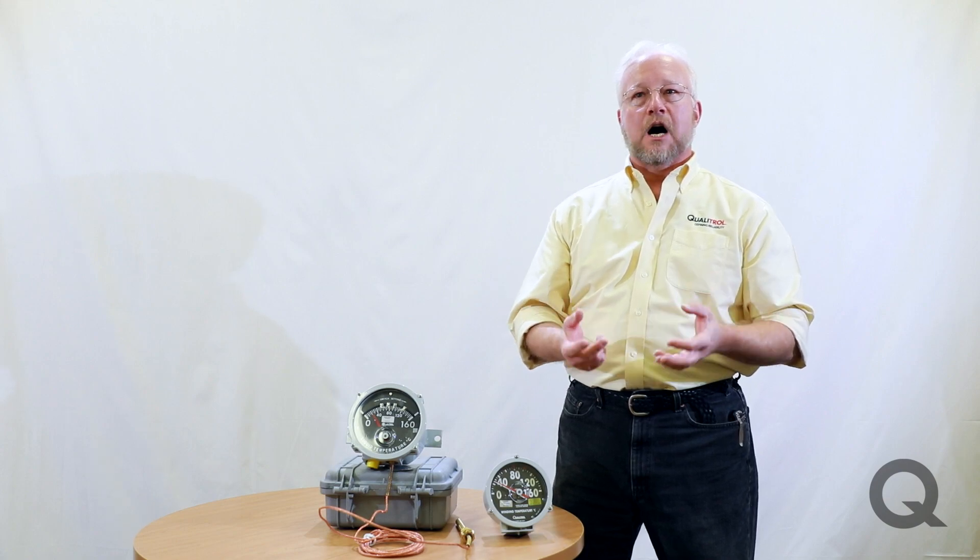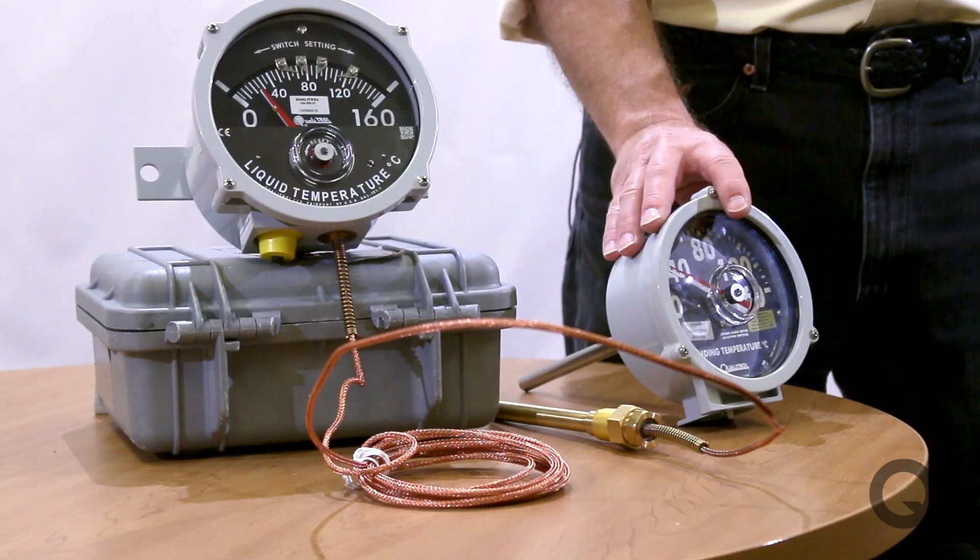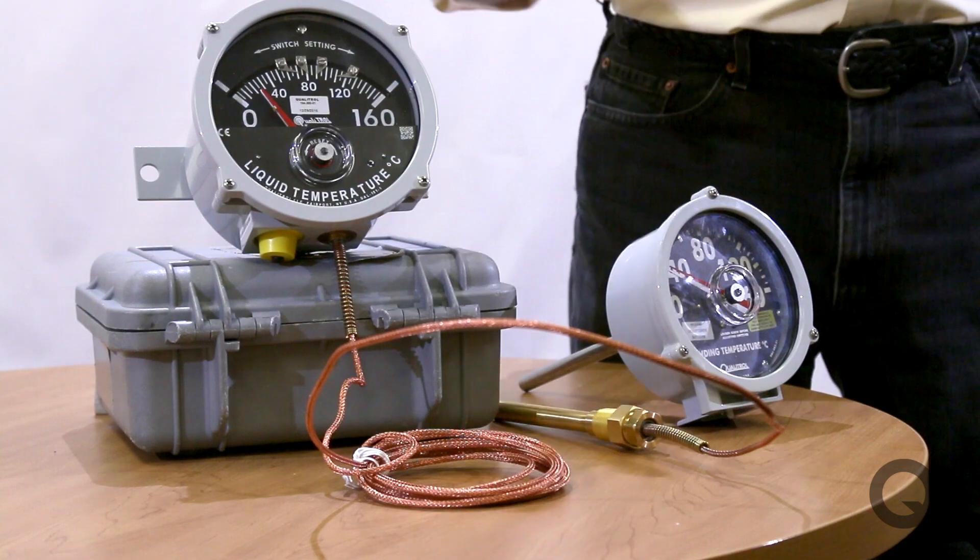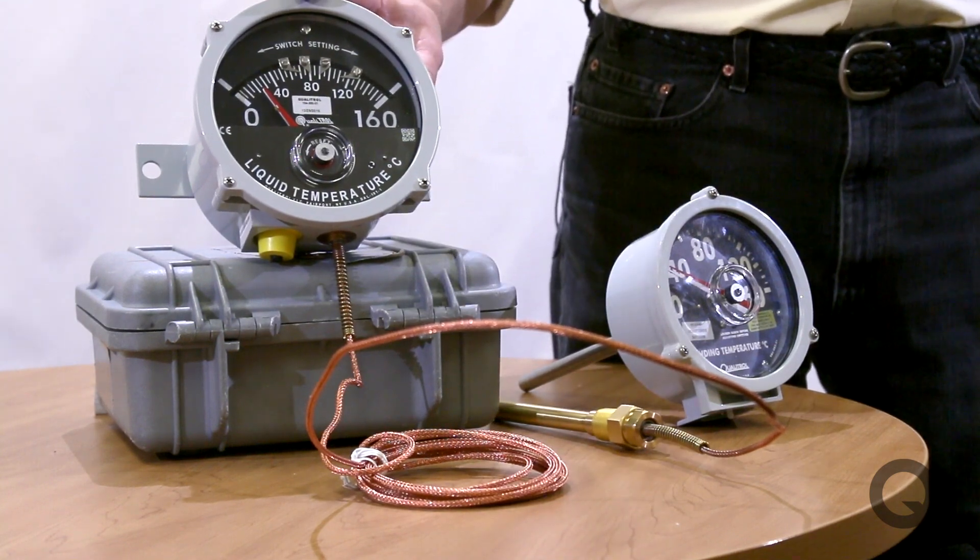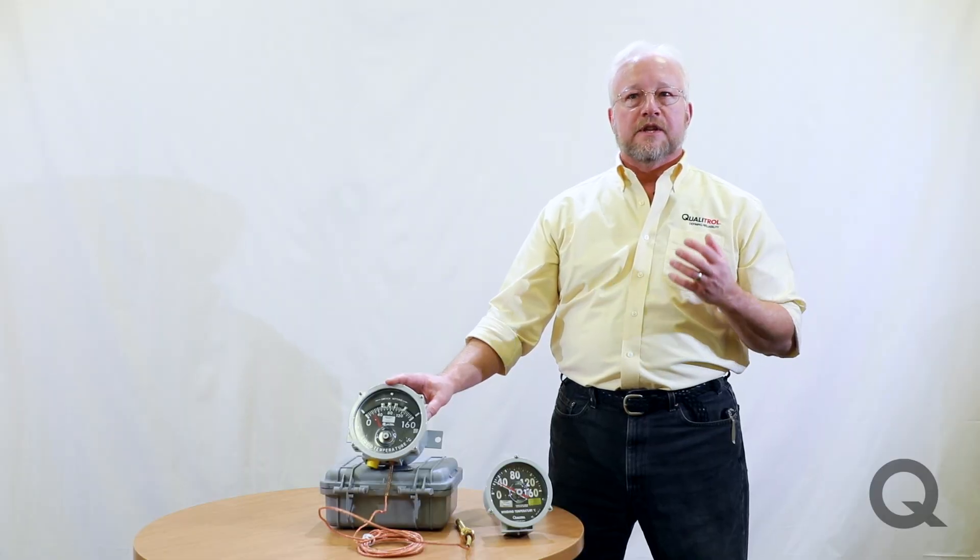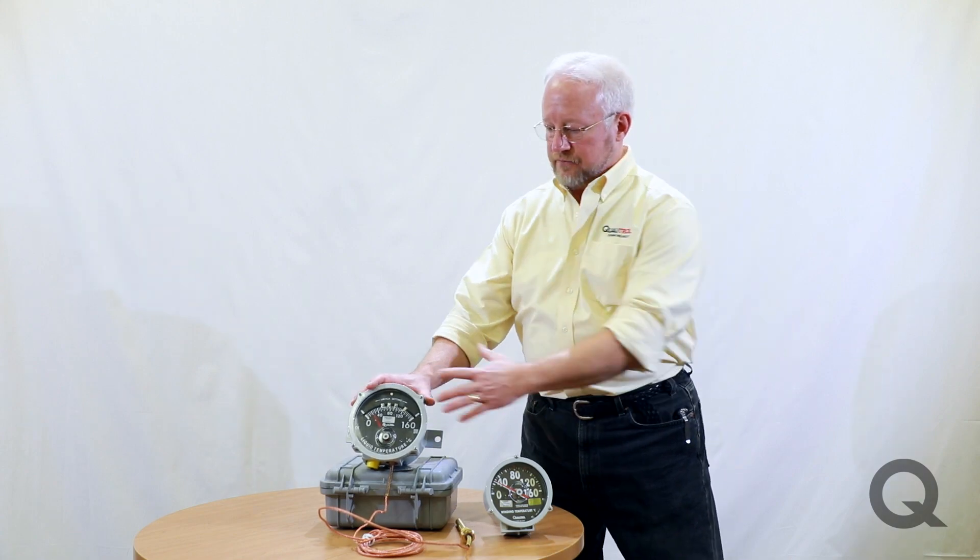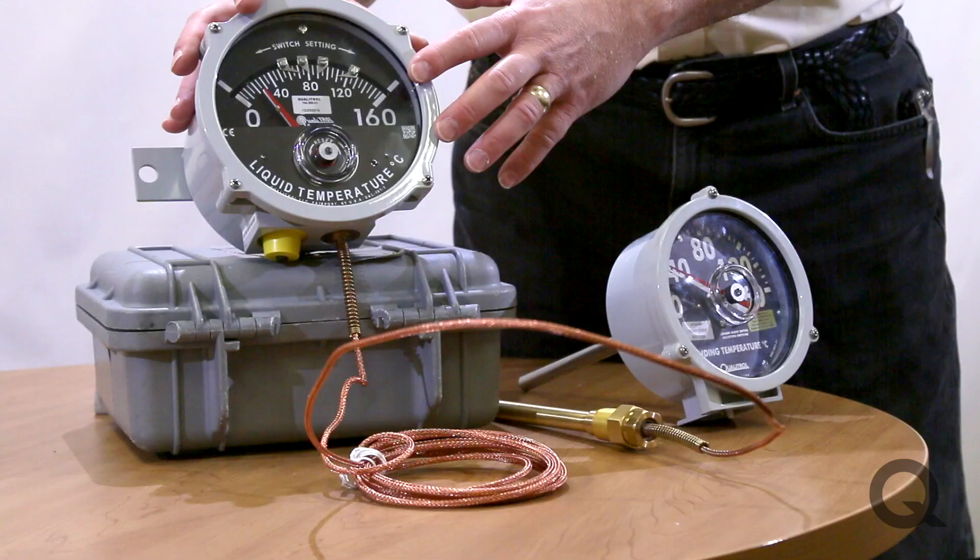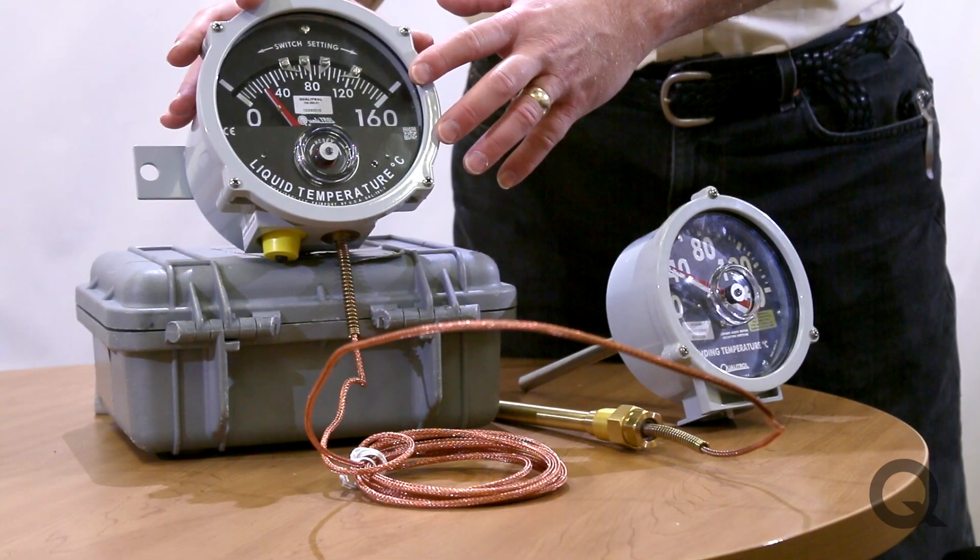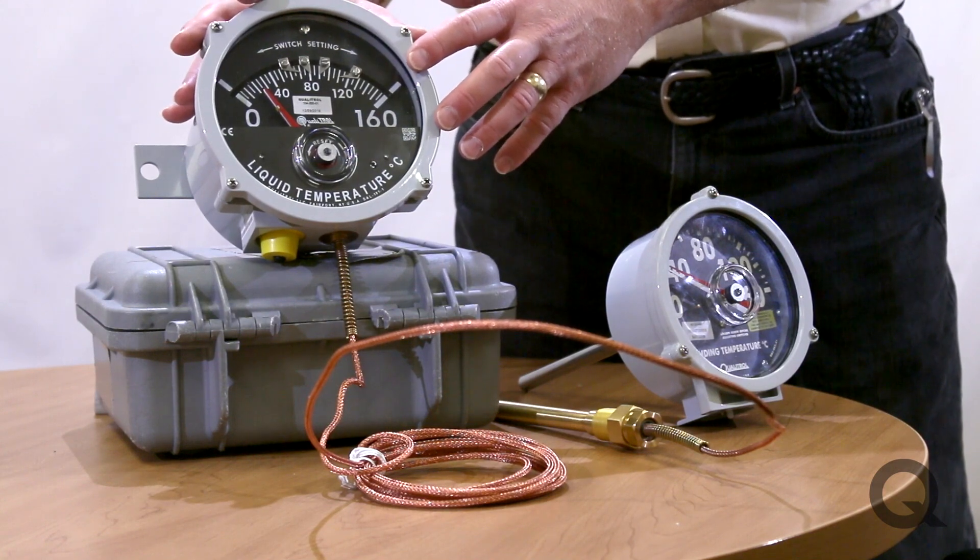Now you can have up to three contacts on a direct mount and up to four contacts on a remote mount. The easiest way to tell is if you look at the face of the dial, you're going to see indicators on there, one for each set of contacts.